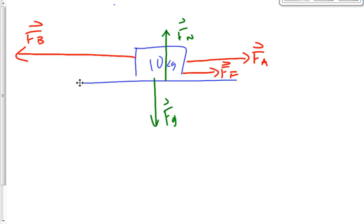The next step, after we've got our free body diagram drawn, is to cancel out things that oppose each other or balance each other. There are two things that balance each other here: the force of gravity and the normal force. That's not always going to be the case — it will be probably 85% of the time, but for now 100%. The three forces we have left are the important ones because they're the ones that don't balance each other.